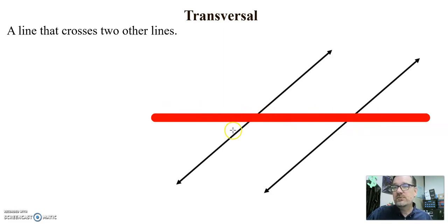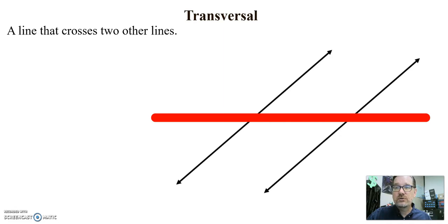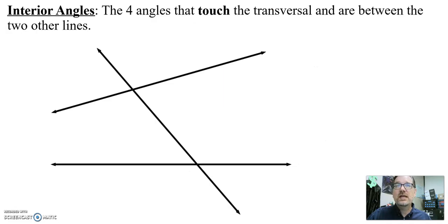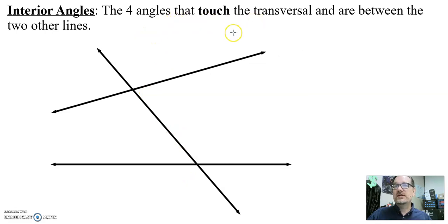Notice what happens is we made one, two, three, four, five, six, seven, eight angles. What we're going to do is take those angles and put them into pairs, groups of two, and then name them. Notice we have four angles on the inside — the four angles that touch the transversal. They must always touch the transversal and be between the two other lines.